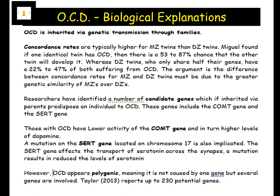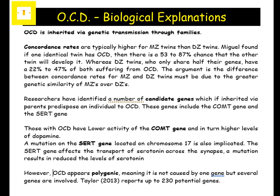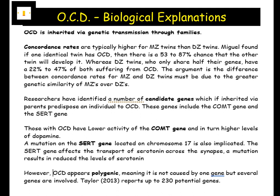The bottom paragraph is the most important: OCD is polygenic. That means we cannot isolate one gene — several are involved. So even if we talk about the COMT gene and the SERT gene, we couldn't say that in everybody that's the gene. It's probably better to quote Taylor, who says there could be up to 230 potential genes. The key word you want there is polygenic.